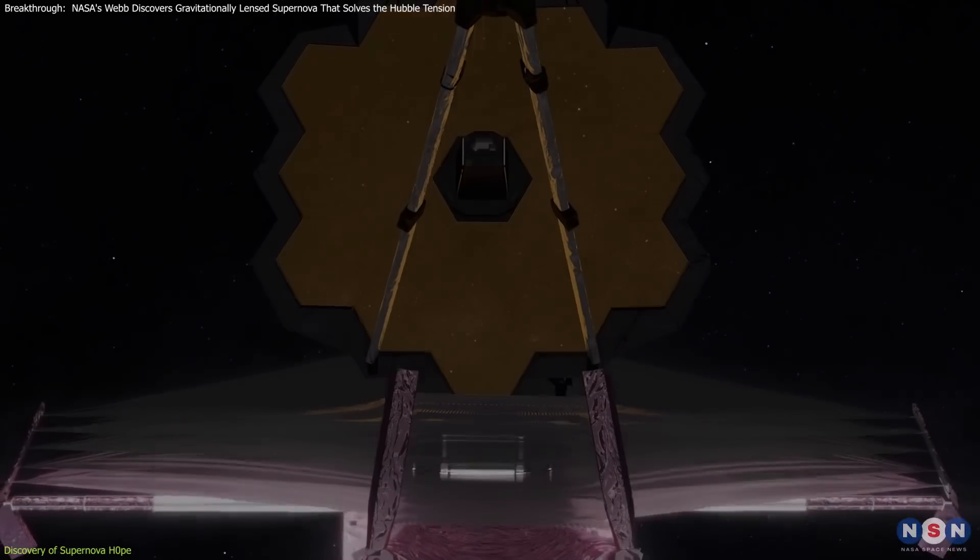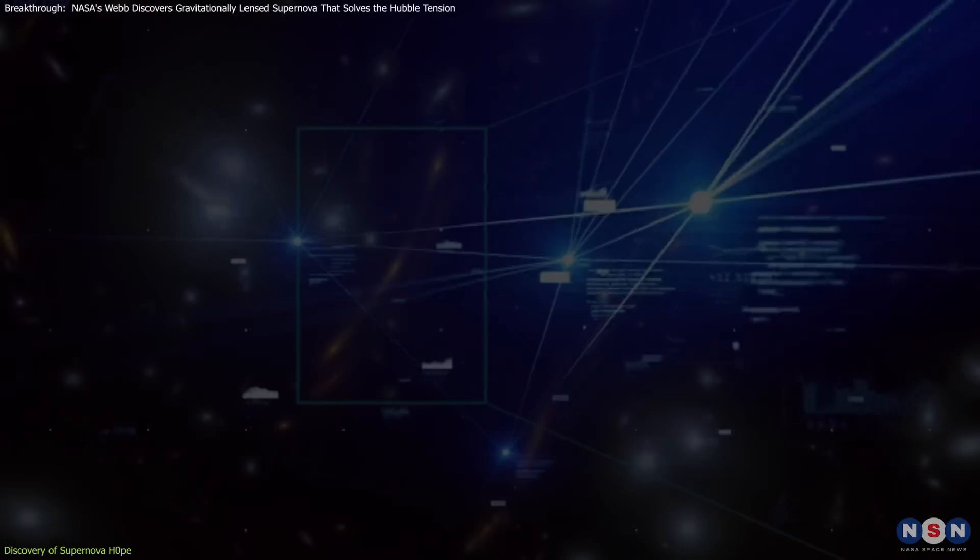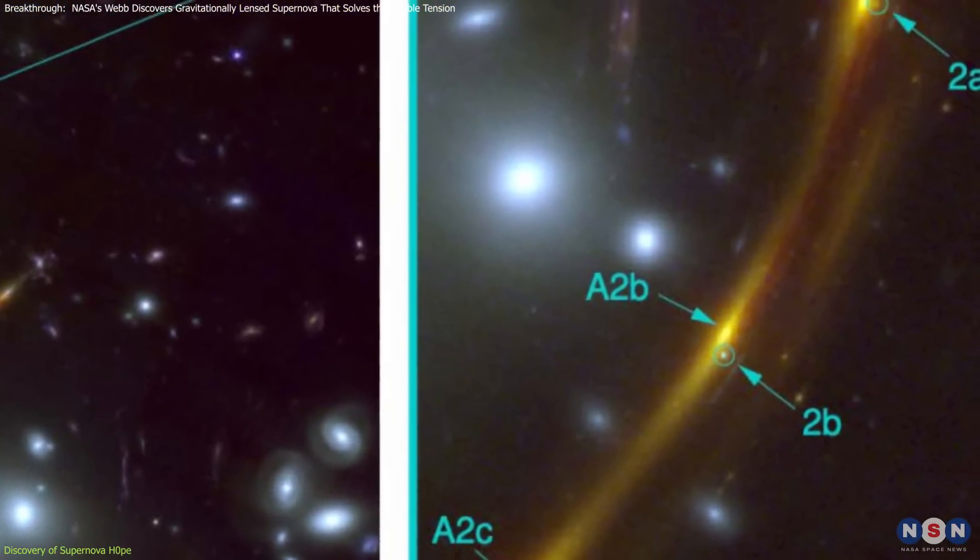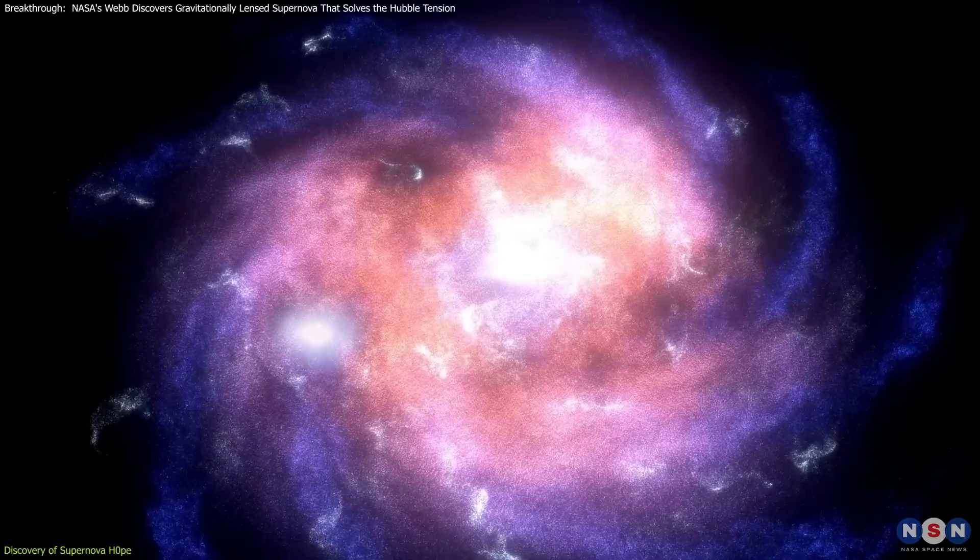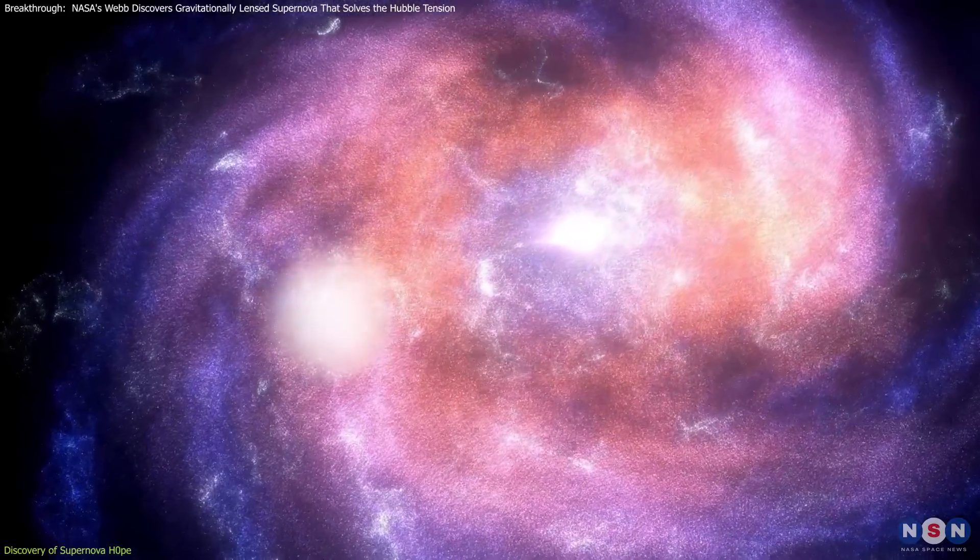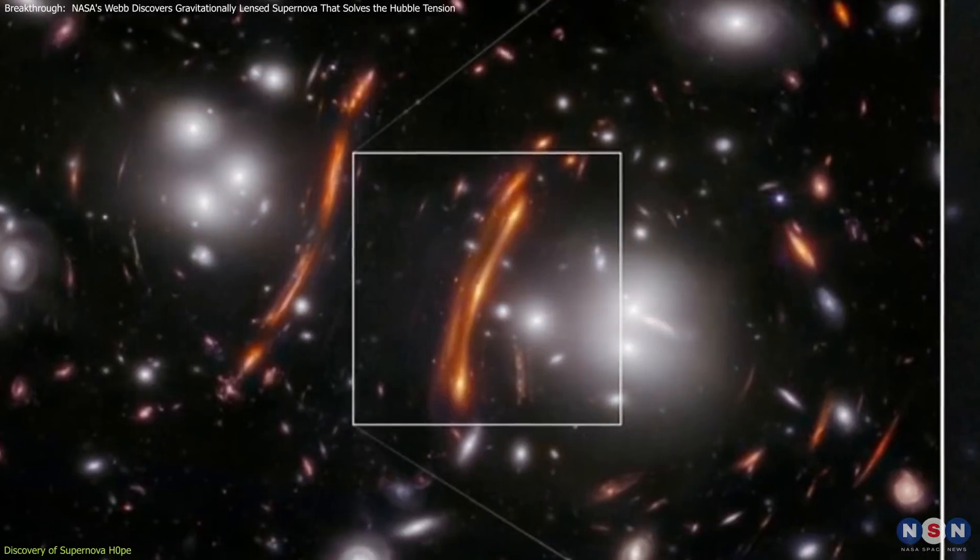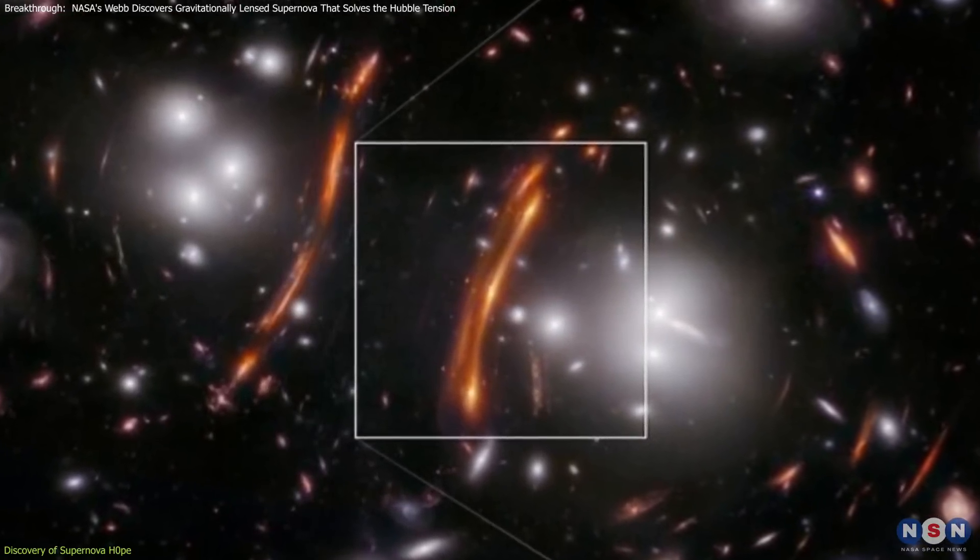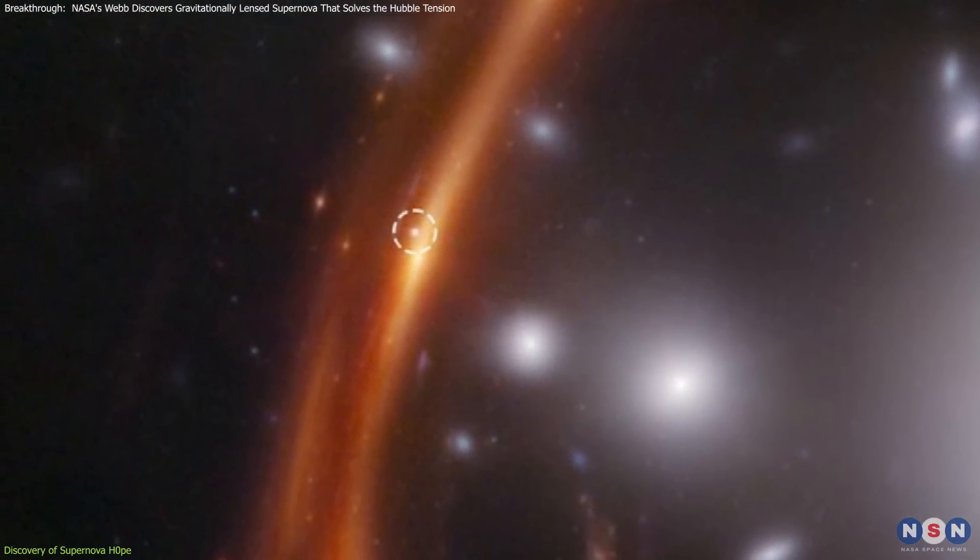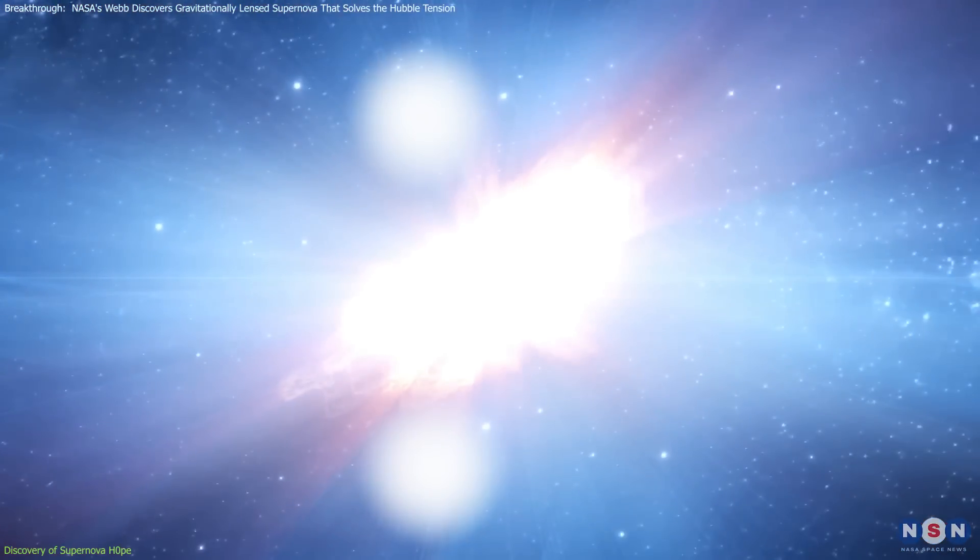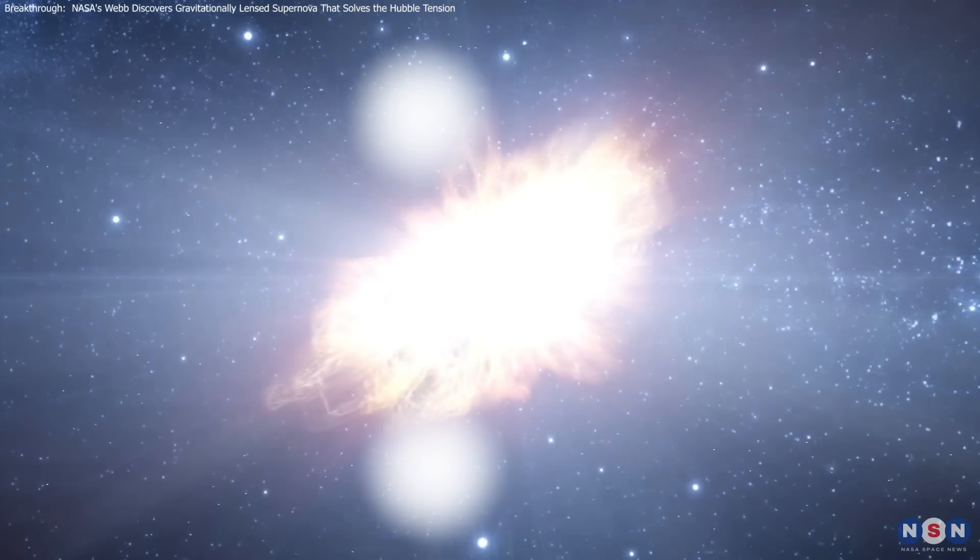When Webb's data arrived, the team led by Brenda Frye from the University of Arizona quickly analyzed the images. They were excited to confirm that the dots were indeed a supernova that had exploded in a galaxy much farther away than the galaxy cluster acting as the lens. The gravitational lensing of the galaxy cluster splits the supernova's light into three images, which is like seeing the same star explode at three different moments in time. And just like that, Supernova Hope was born.